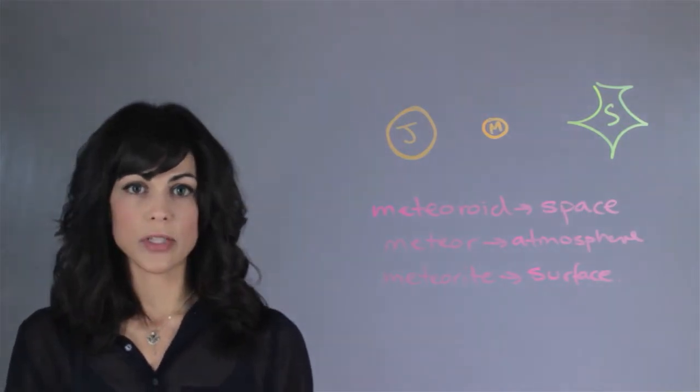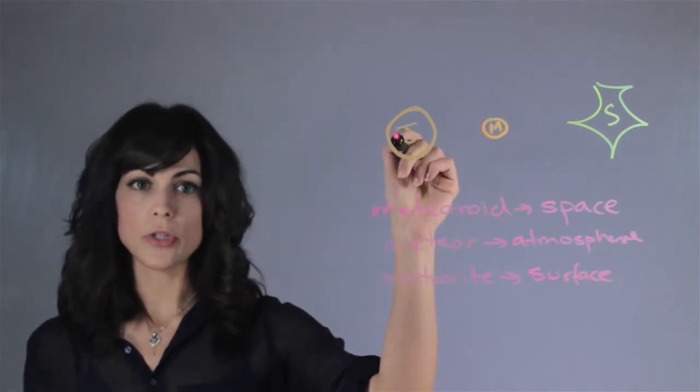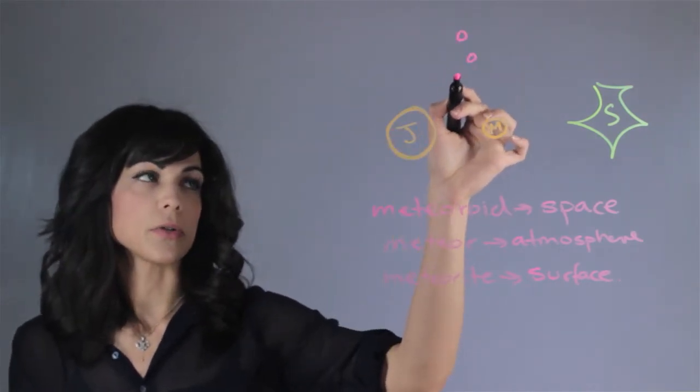Most of the asteroids in the solar system are between the planet Mars and the planet Jupiter and it's called the asteroid belt.